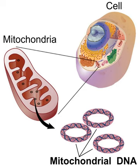Mitochondrial DNA is replicated by the DNA polymerase gamma complex, which is composed of a 140 kDa catalytic DNA polymerase encoded by the POLG gene and 55 kDa accessory subunits encoded by the POLG2 gene. The replisome machinery is formed by DNA polymerase, Twinkle, and mitochondrial SSB proteins. Twinkle is a helicase which unwinds short stretches of dsDNA in the 5' to 3' direction. All these polypeptides are encoded in the nuclear genome.